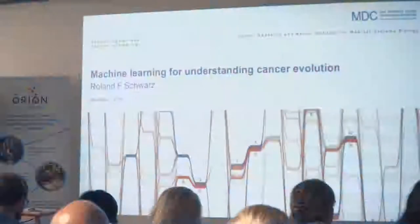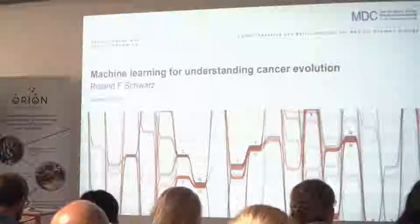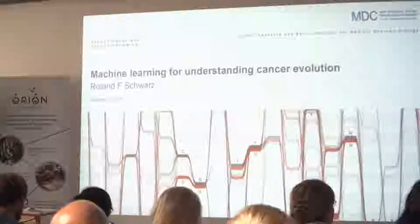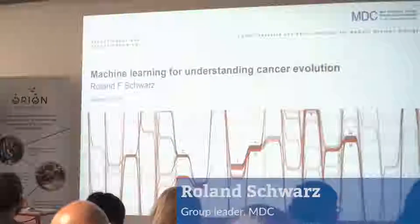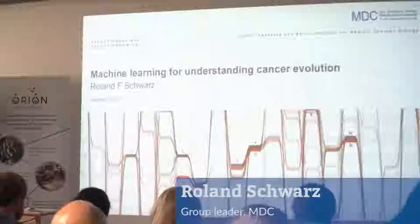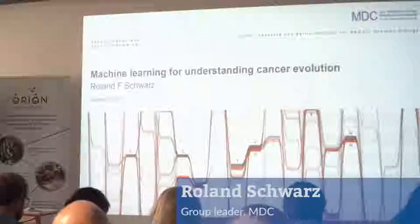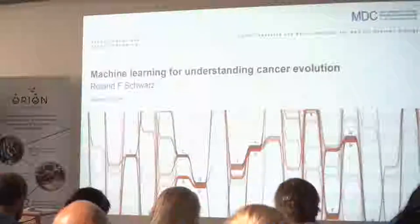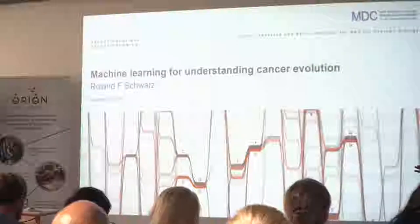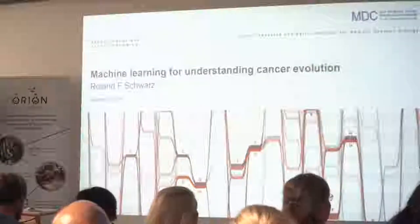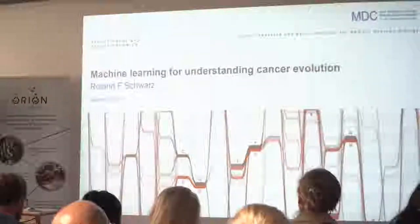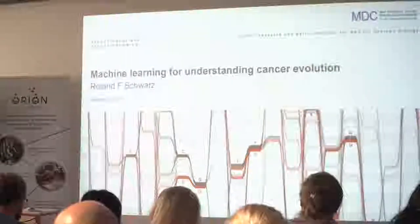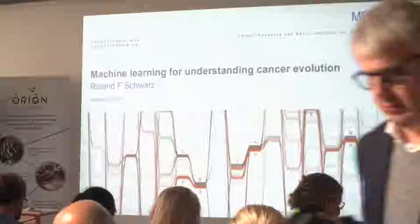My name is Roland Schwartz. I'm a computational group leader at the Max Delbrück Center in Berlin. That means we don't have a lab, so we don't do experiments. Every work that we do is purely computer science, algorithms, and work on computers.